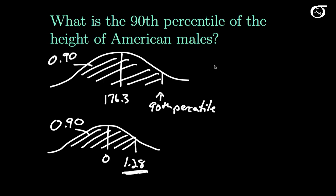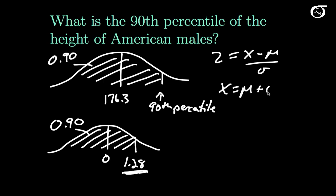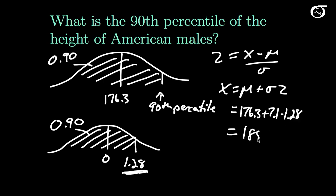We know that Z equals X minus mu over sigma, which implies X equals mu plus sigma times Z. So if the 90th percentile of the standard normal distribution is Z equals 1.28, the 90th percentile of X is the mean plus the standard deviation times 1.28 — the 90th percentile of Z. This works out to 185.4 centimeters. So the 90th percentile of the height of American males is approximately 185.4 centimeters.